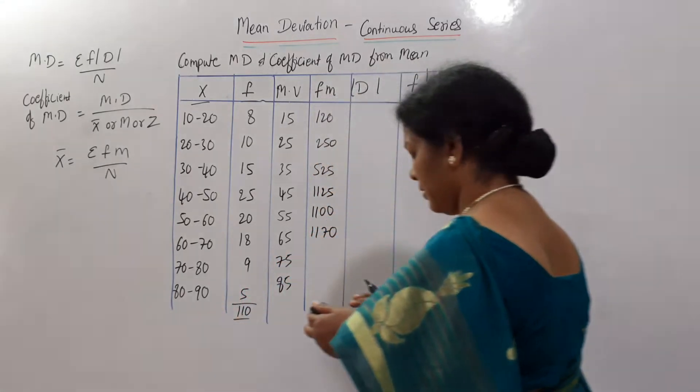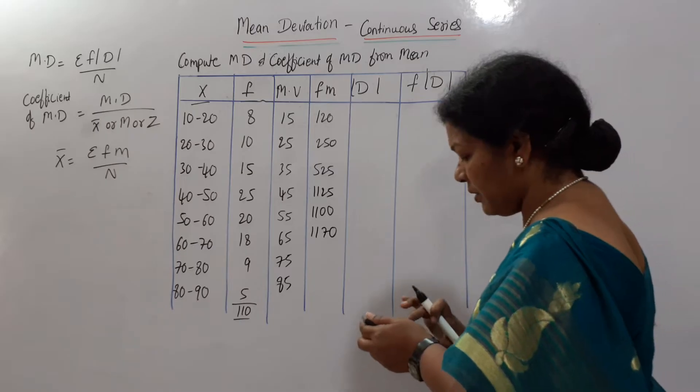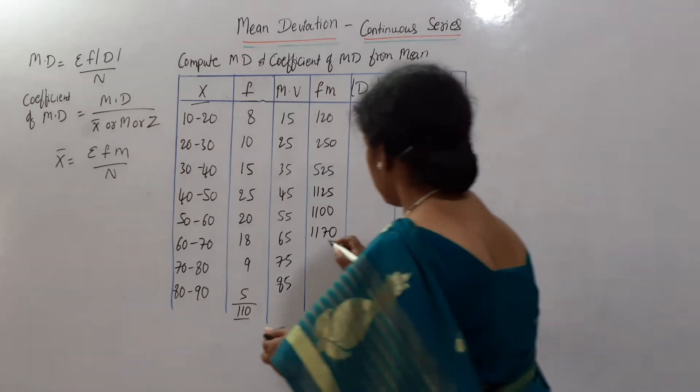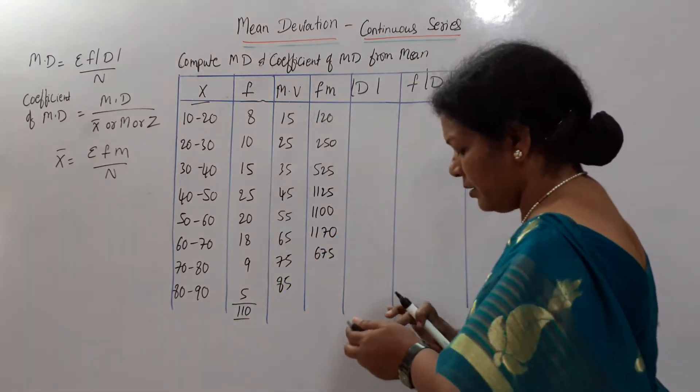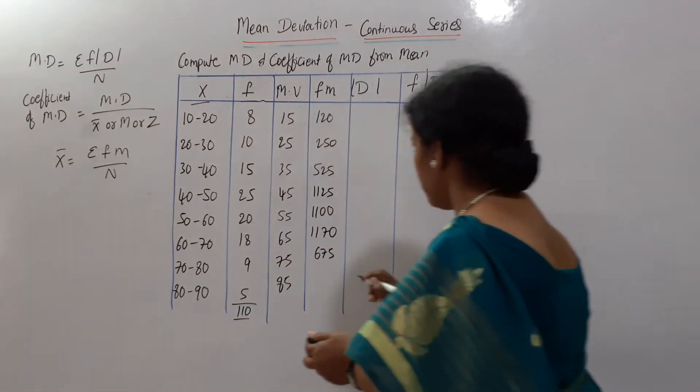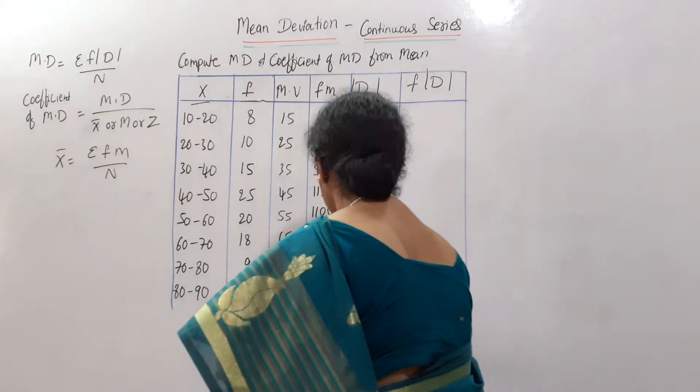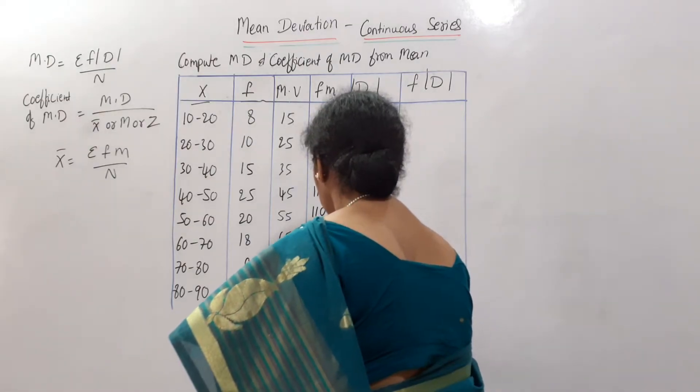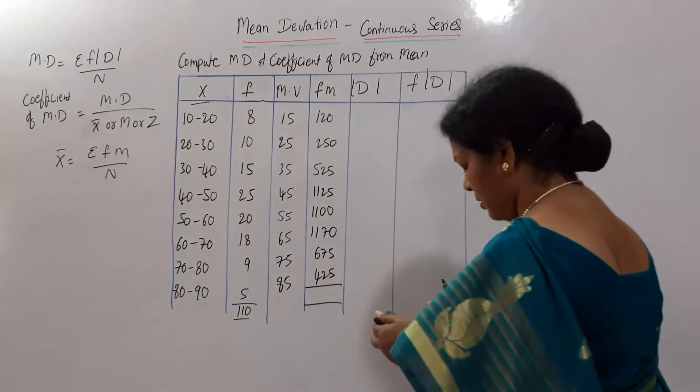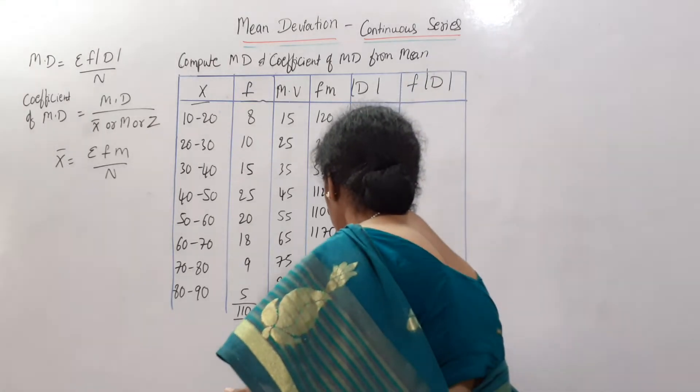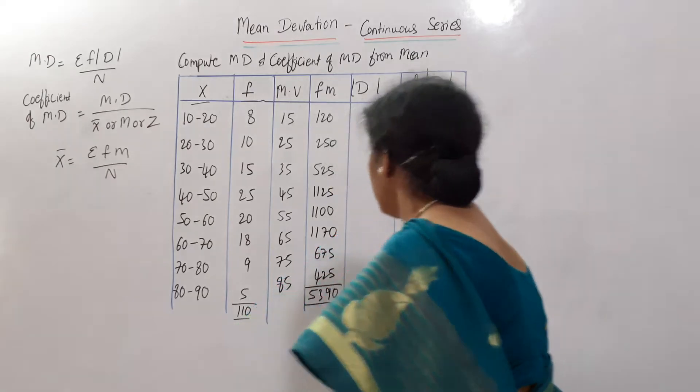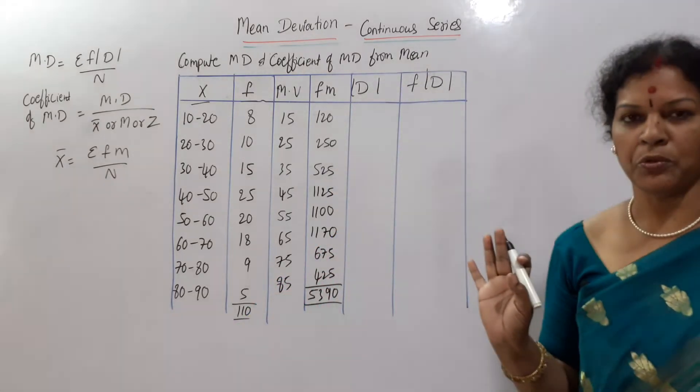1865, 1170, 975, 675, 585, 425. If you see this total, 5390, 5390 is fm total.